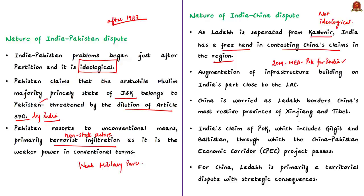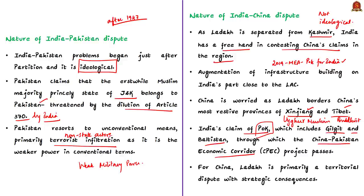You need to know about the region of Ladakh. It borders China's provinces of Xinjiang and Tibet. In Xinjiang, Uyghur Muslims are revolting against the Chinese communist ideology; similarly, there is Buddhist resistance in the Tibetan region. Pakistan-occupied Kashmir includes Gilgit and Baltistan, and China has invested heavily in this region under the China-Pakistan Economic Corridor project. China does not want India to gain more control in Ladakh, which also includes the Chinese-occupied Aksai Chin area.